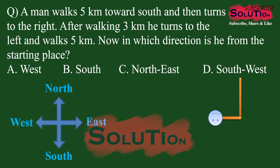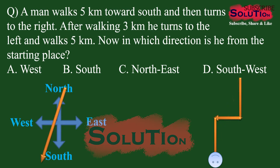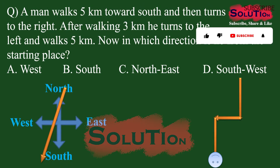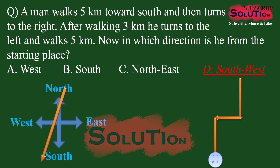He turns left and walks five kilometers again. Now, in which direction is he from the starting place? Looking from the starting place, the direction is pointing towards southwest — west-south, southwest — so the answer is option D.